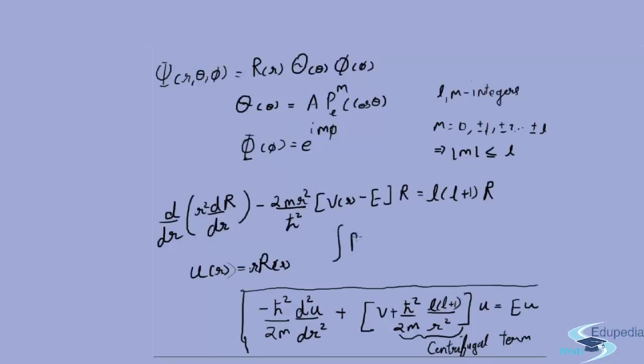One more thing we need to see is the normalization. R goes from 0 to infinity, not minus infinity to infinity—that's a mistake which many beginners make. This becomes integral mod u squared dr equals 1. This will be the normalization constraint.